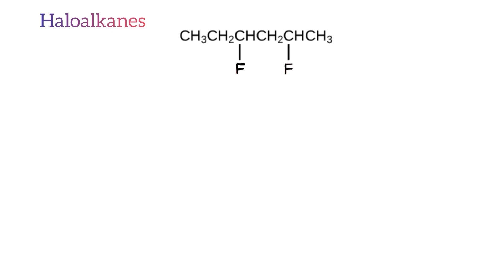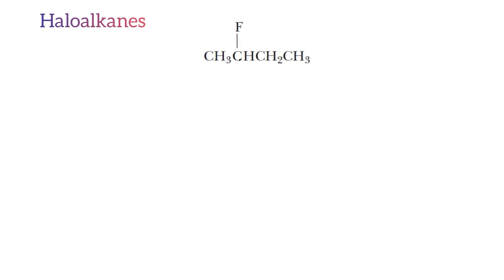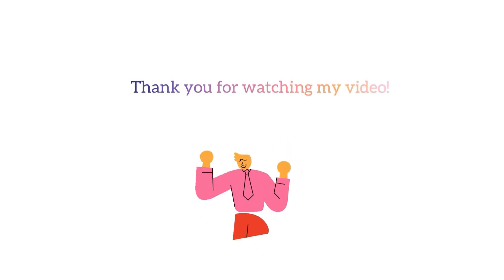Haloalkanes are a class of organic compound that contains fluorine atoms. There are six carbon atoms in the main chain, therefore the prefix will be 'hex'. There are two fluorine atoms on carbon two and four, therefore the name starts with 'difluoro', giving 2,4-difluorohexane. Here is another example — feel free to pause the video and give it a try. There are four carbon atoms, so the prefix is 'but'. There is one fluorine atom on carbon two, so the locant is '2-fluoro', and the name of this molecule is 2-fluorobutane.